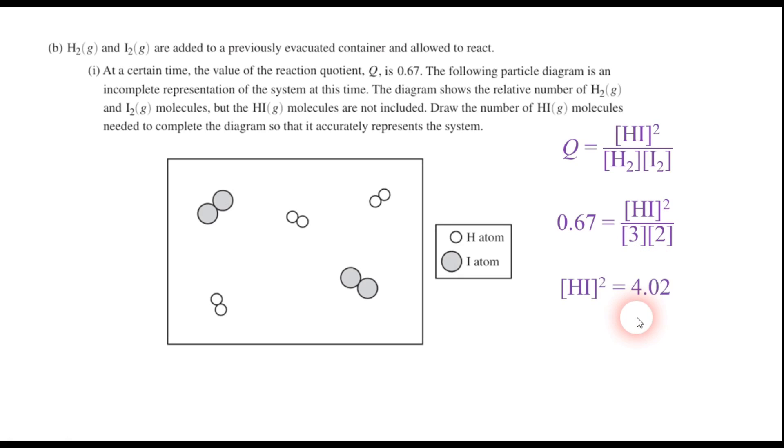And when I solve for HI, well, I cross-multiply, I find that the HI quantity squared equals about 4.02. Take the square root, and I find that HI is very, very close to 2. This tells me that I should have two HI molecules drawn in the system at that particular moment in time. So I'm going to draw in two HI molecules, one there and one there. So that's how you can solve that question there for part B.